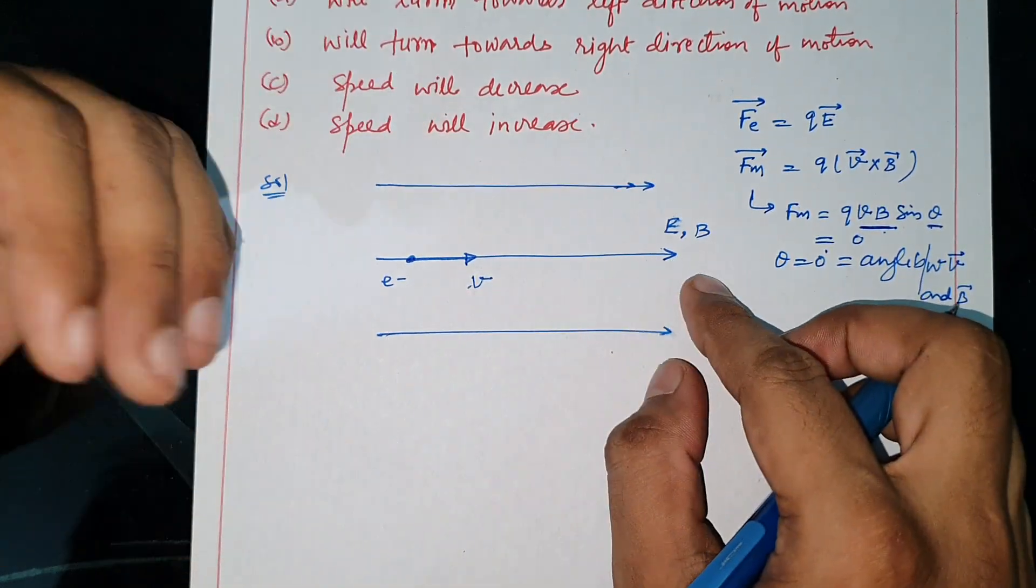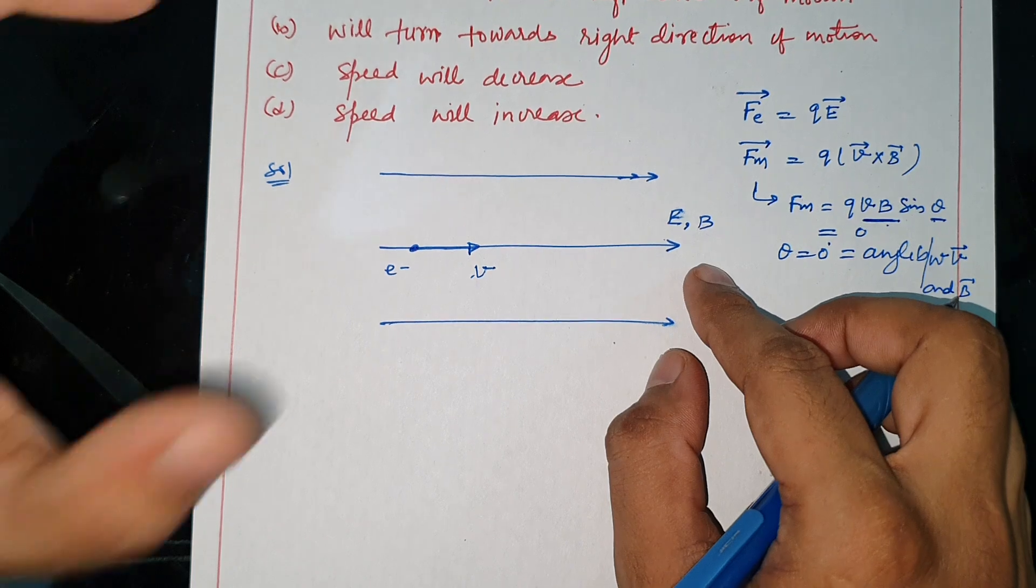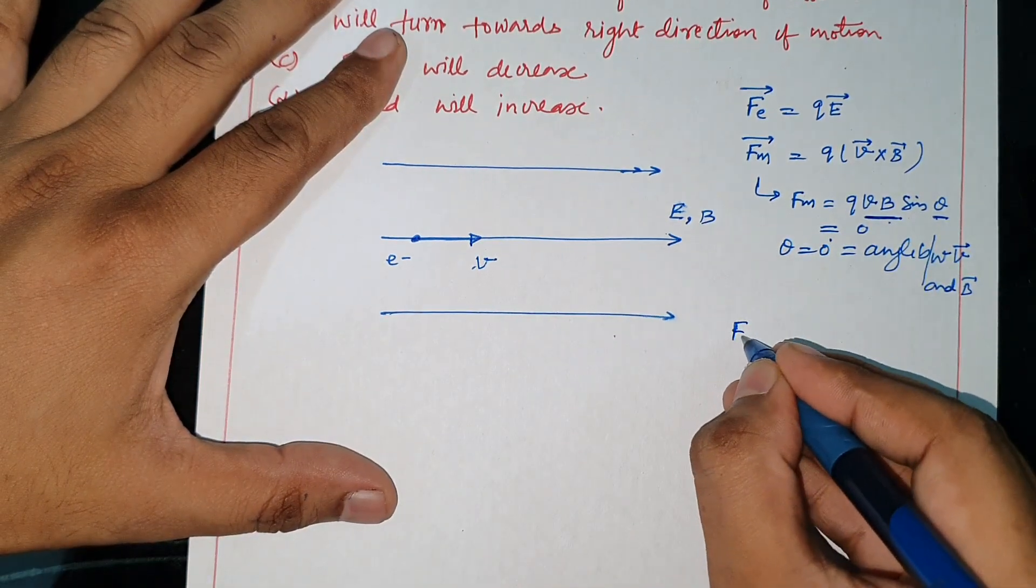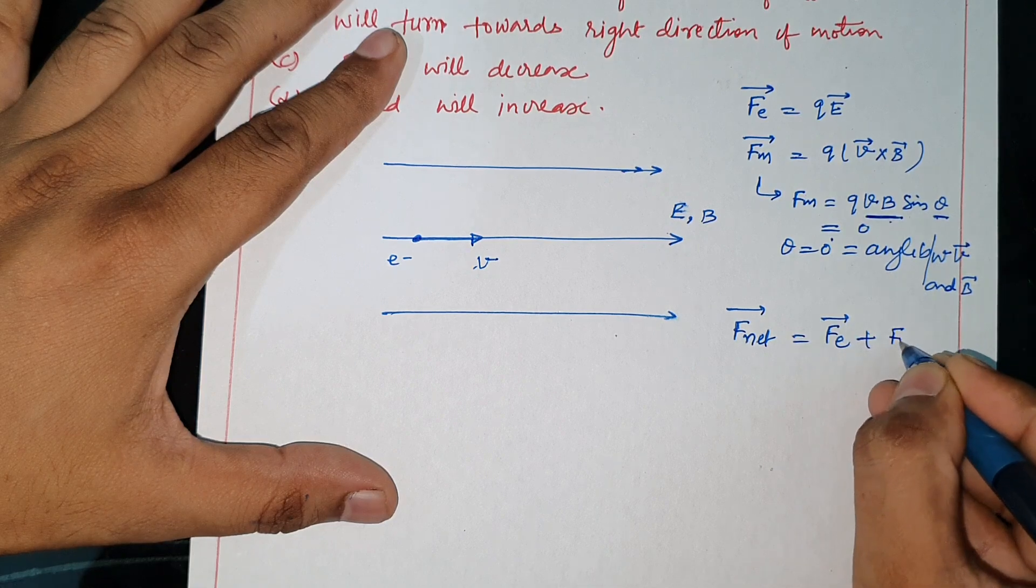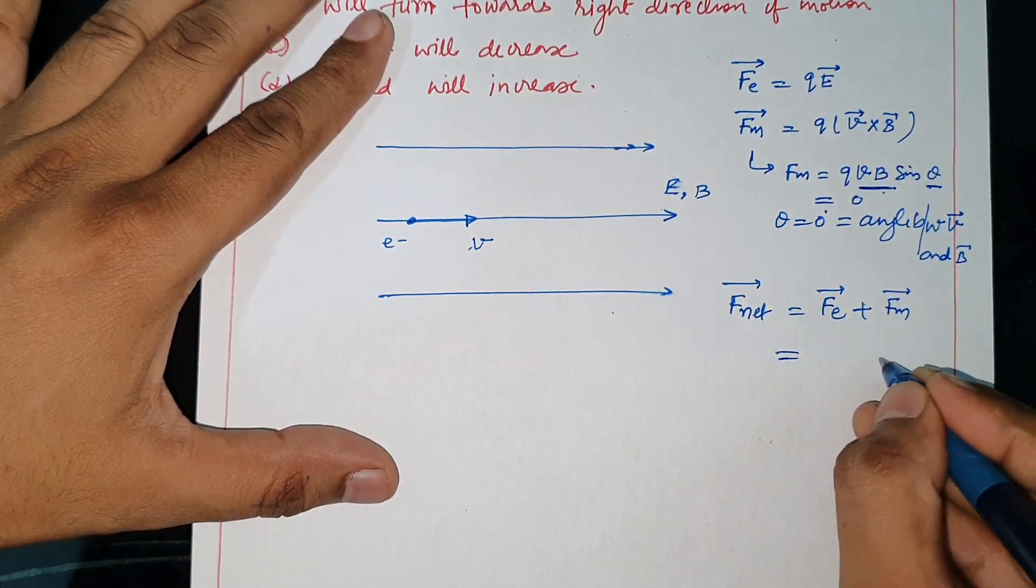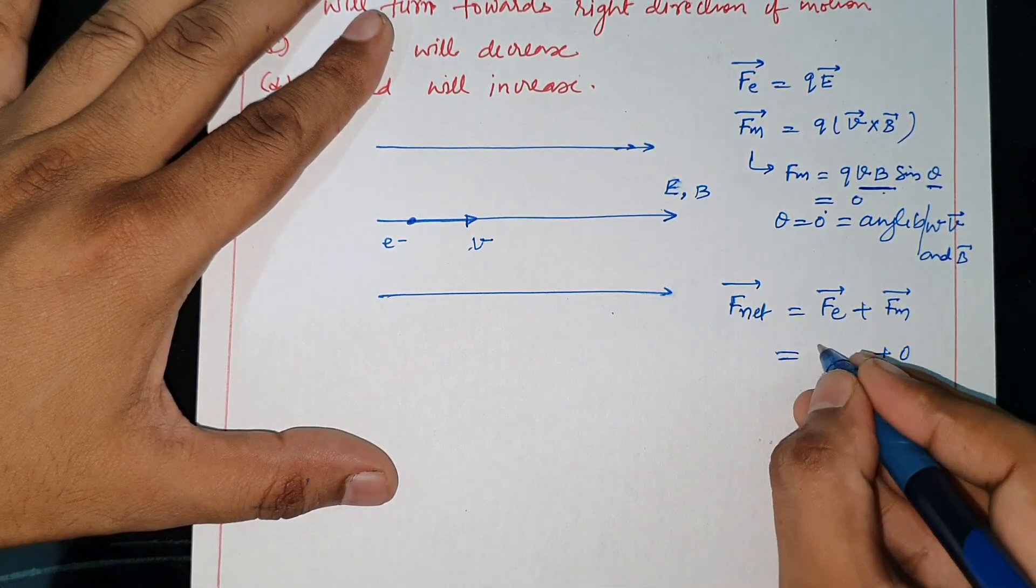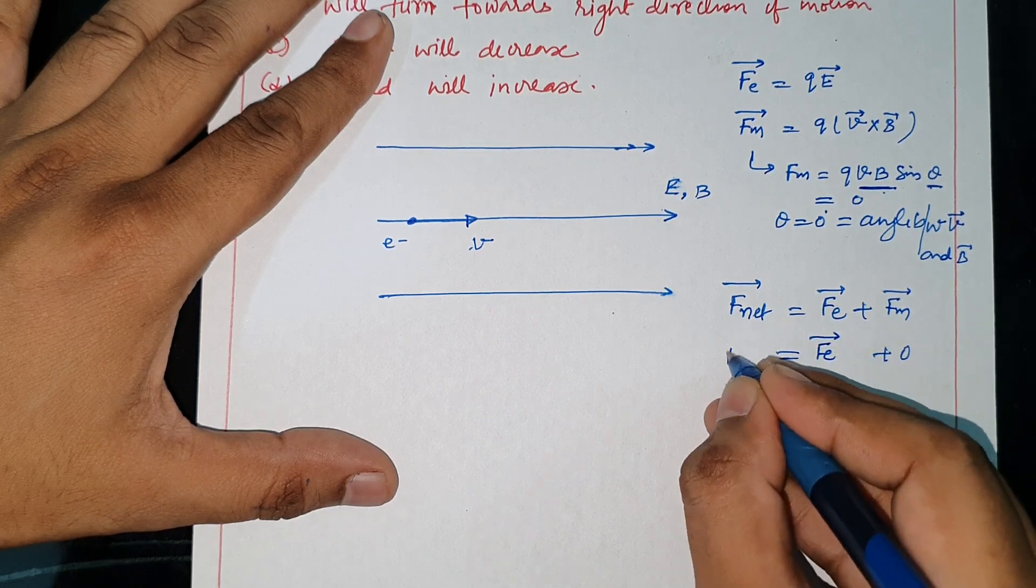That means the electron experiences only electrostatic force. The net force then equals electric force plus magnetic force, but magnetic force is 0, so net force equals electric force.